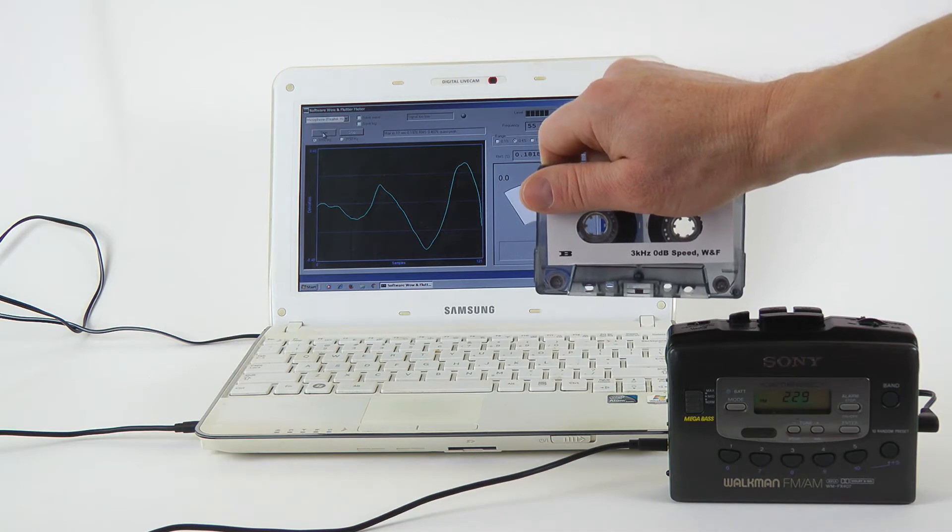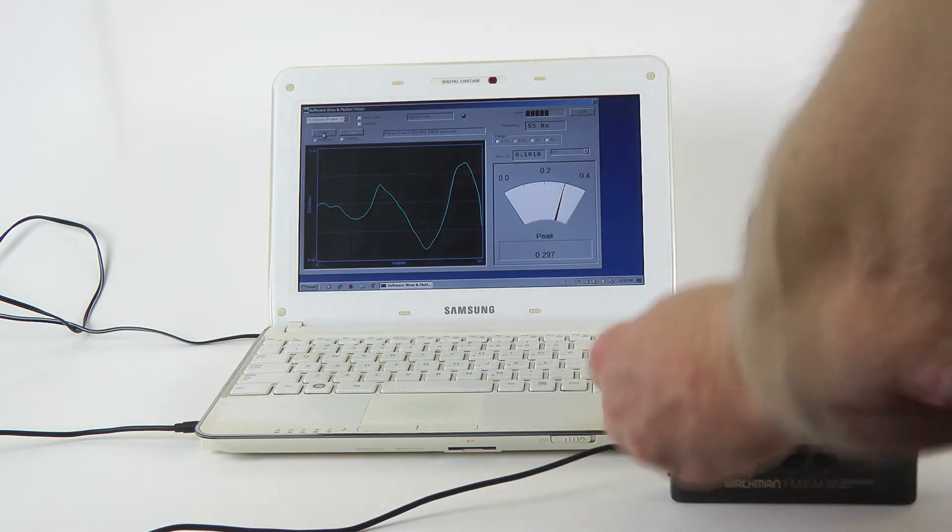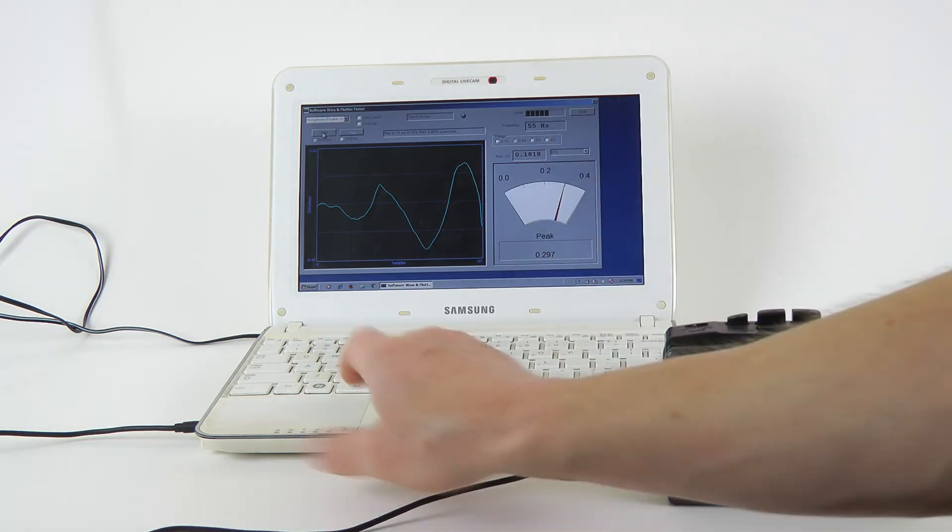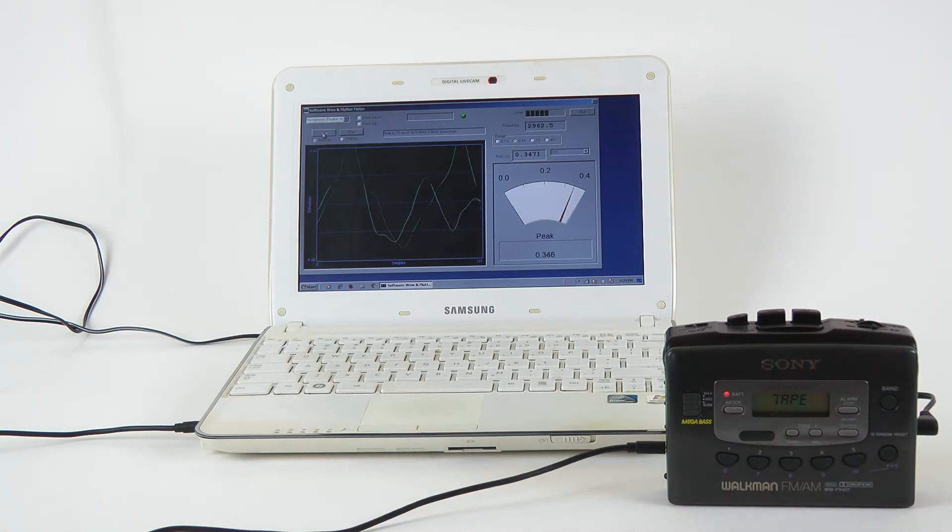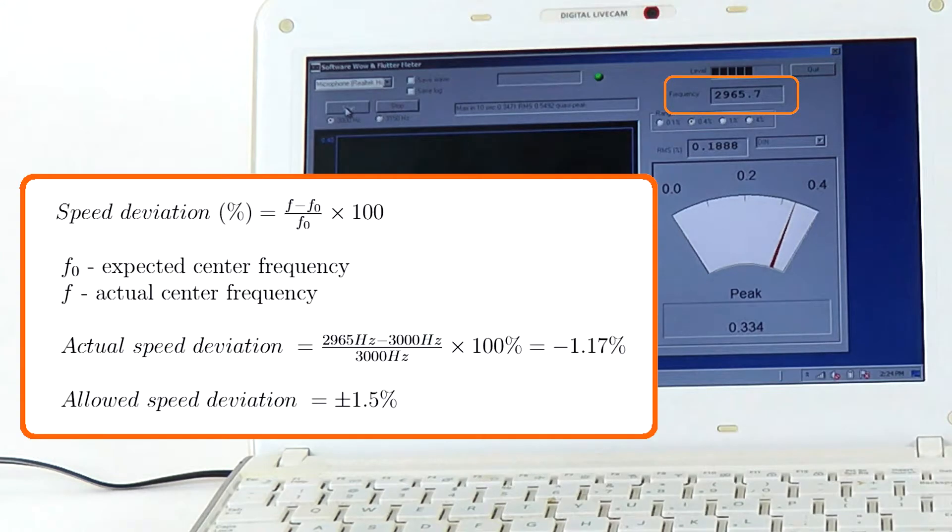Here I am using a cassette with a 3 kHz test tone. When played on my Walkman, the actual center frequency is 2965 Hz. The tape is being played slower than normal, which is within generally accepted tolerance of 1.5%, either up or down the nominal speed.